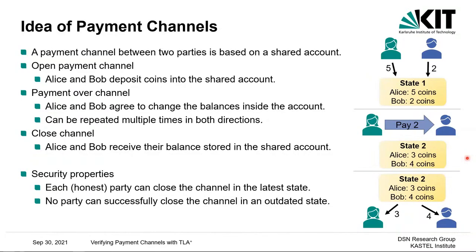There are two main security properties. First, we want each honest party to always be able to close the channel in the latest state. Second, we want no party to successfully close the channel in an outdated state. For example, it would be better for Alice to close in the initial state where she owns five coins, but of course that should not be possible.